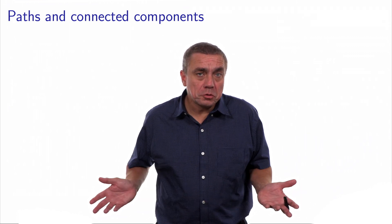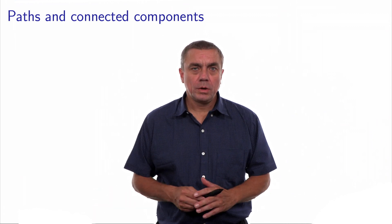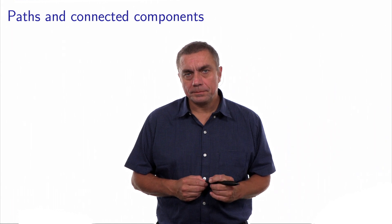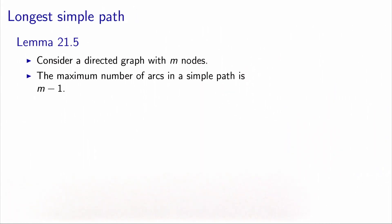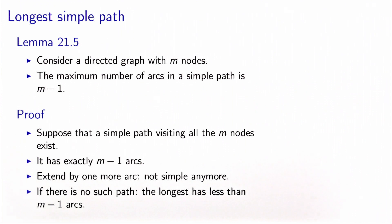Sometimes two nodes are not connected by any path. In this video, we are providing some formalism to model these concepts. The first result is about the longest possible simple path that we can have in a directed graph. The maximum number of arcs is m-1, where m is the number of nodes in the directed graph. This is relatively simple to prove.